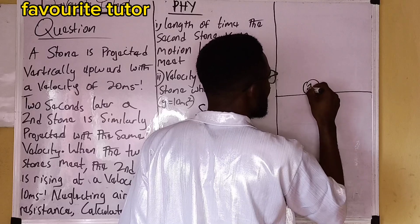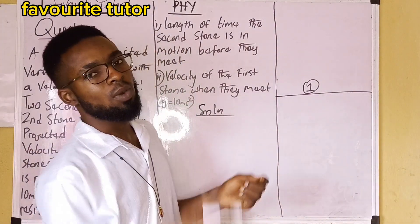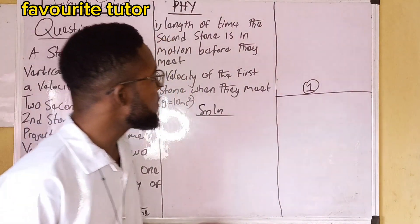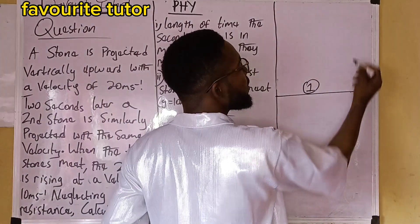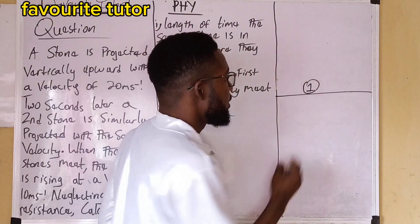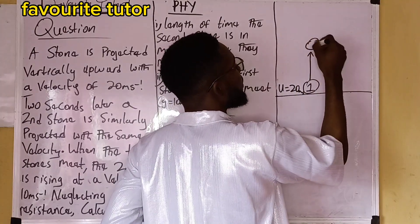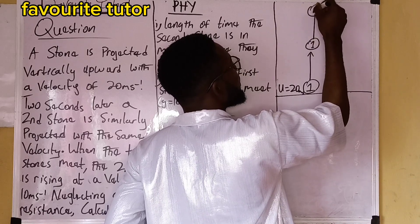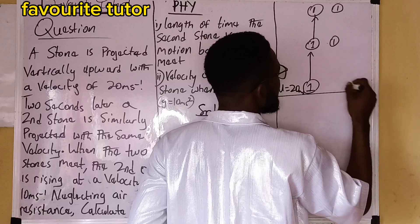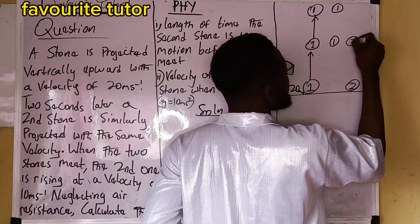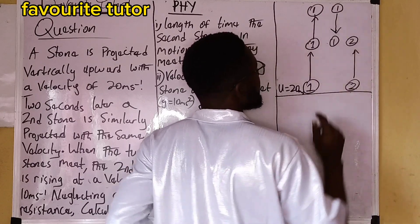Let's illustrate this using a diagram. The first stone is projected upward, goes up, exhausts its velocity, and starts coming down. Two seconds later the second stone is projected upward. There comes a point when these two stones meet — the second stone is rising while the first stone is coming down.